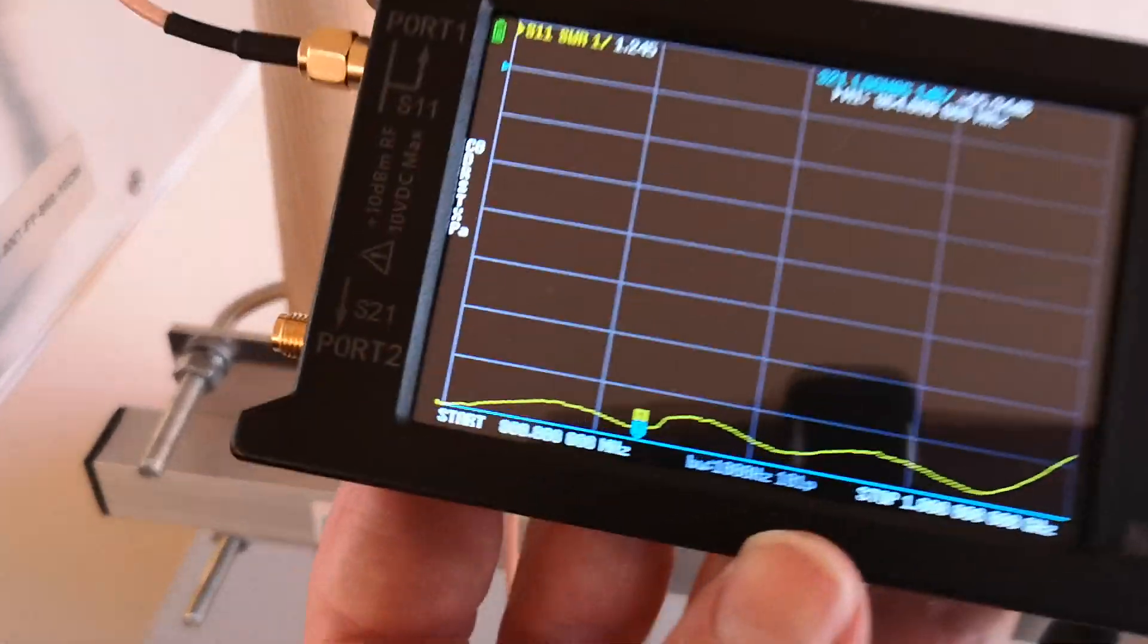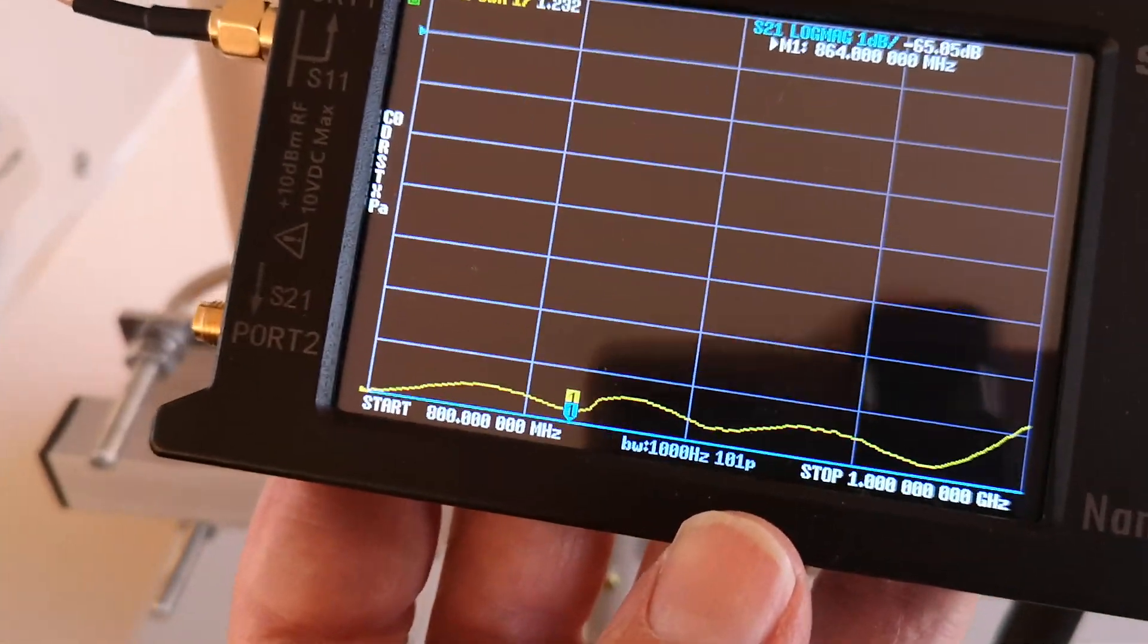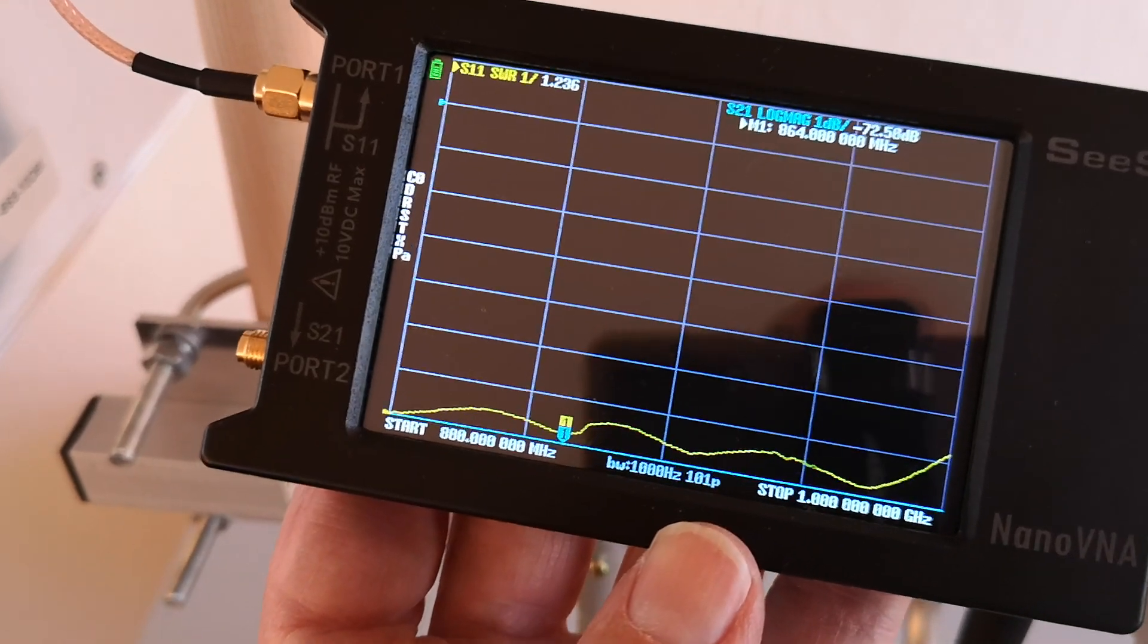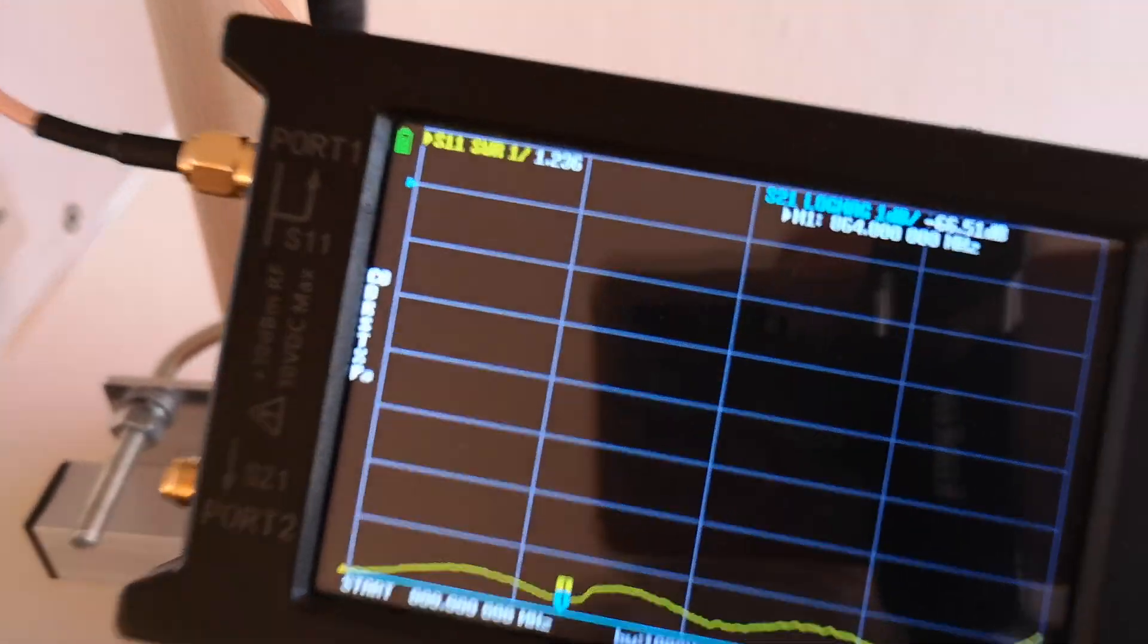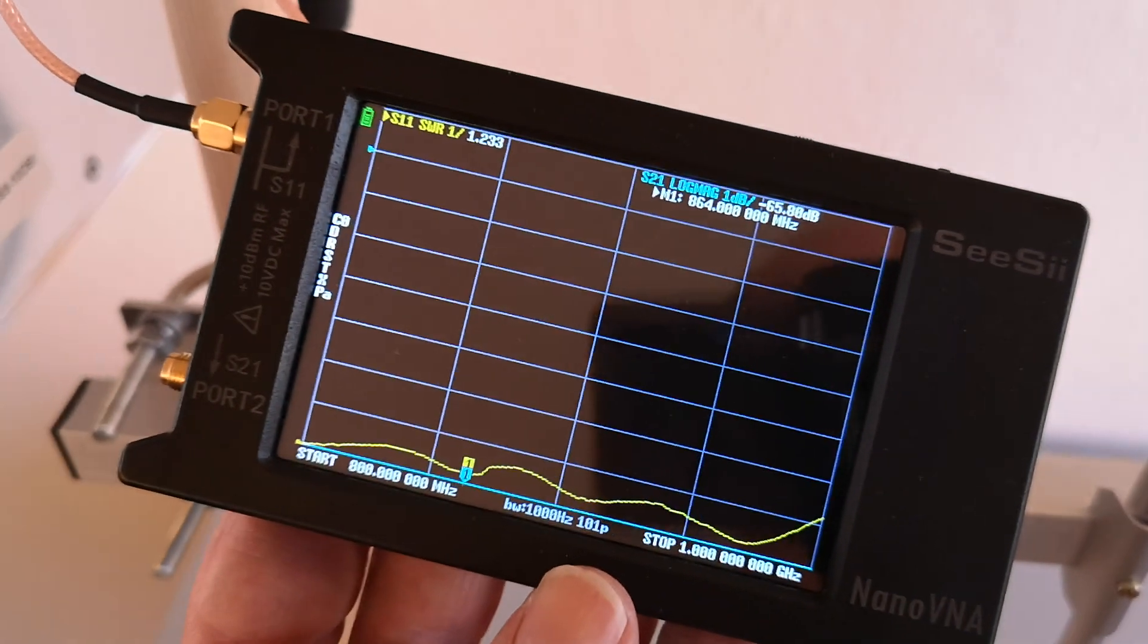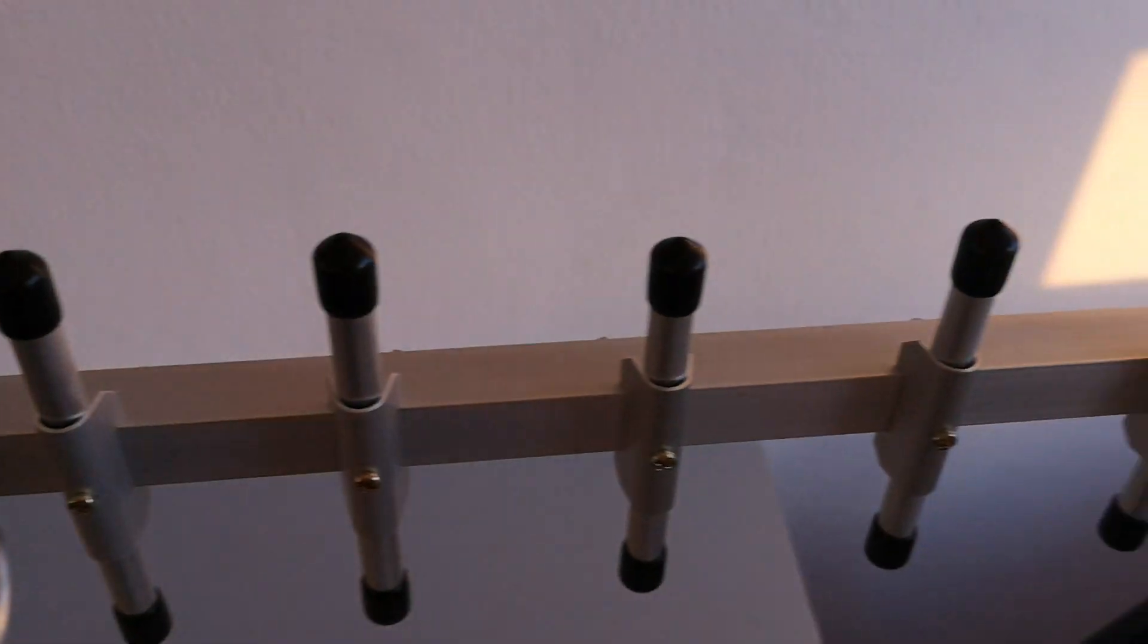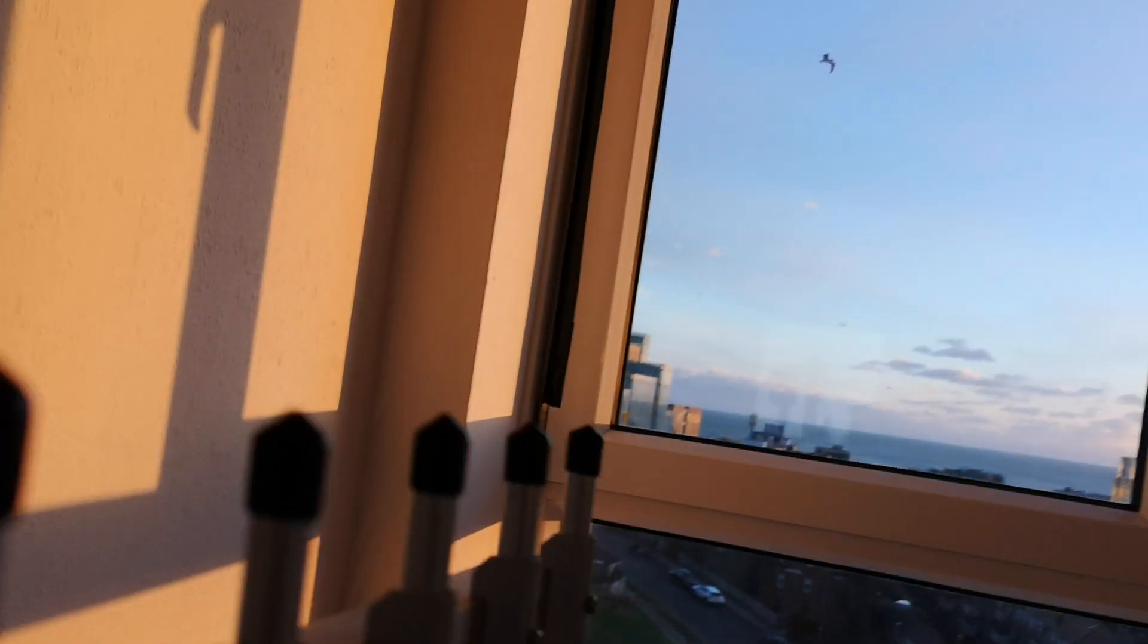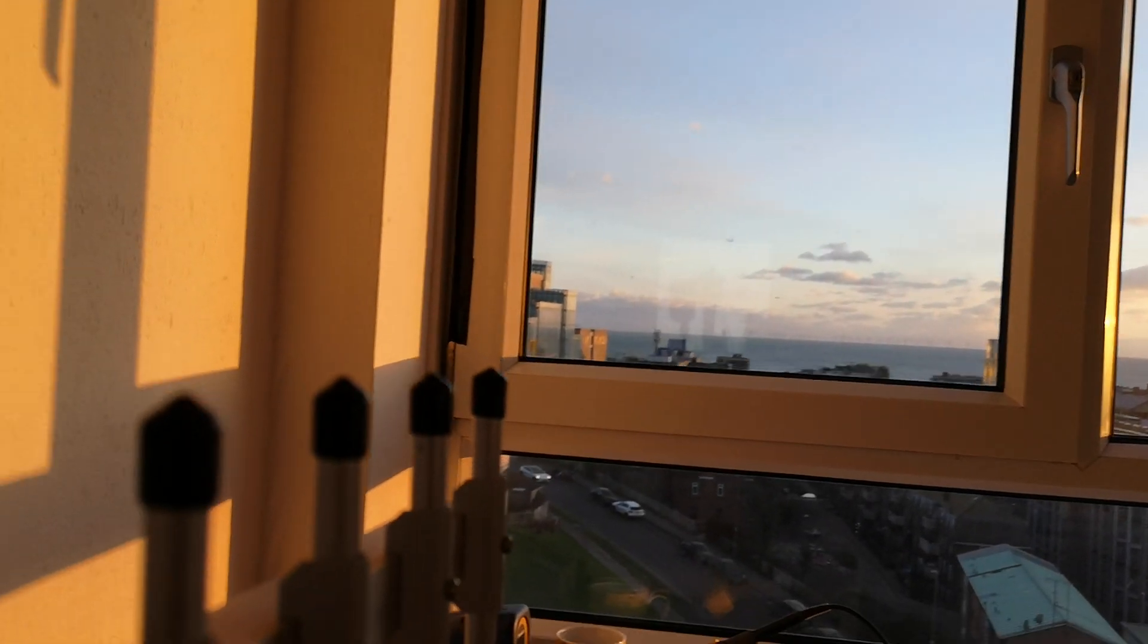This is the Yagi antenna and look at that. The SWR is very low across the whole range from 800 MHz to 1 GHz. It's about 1.2-ish, 1.2 something.